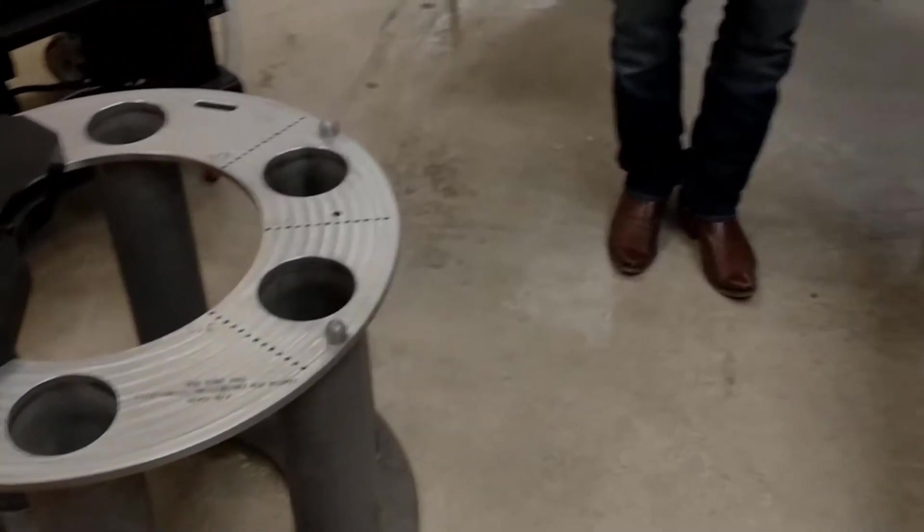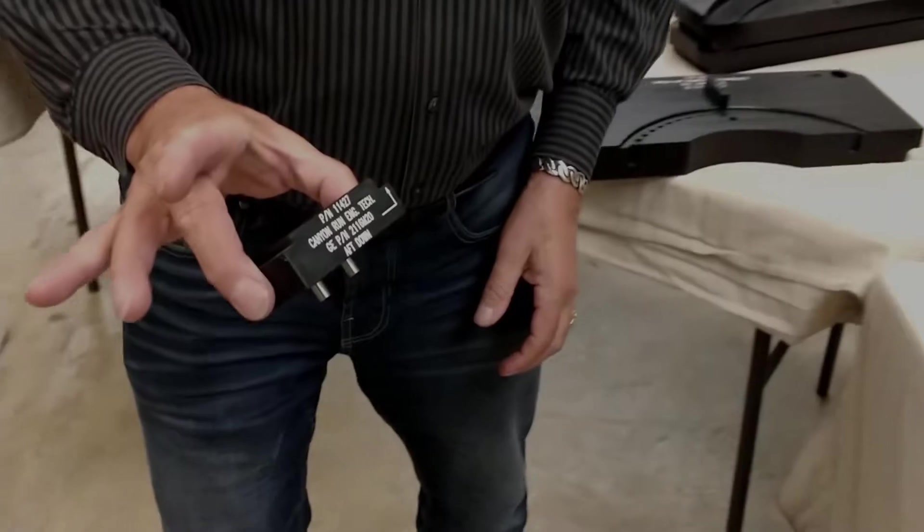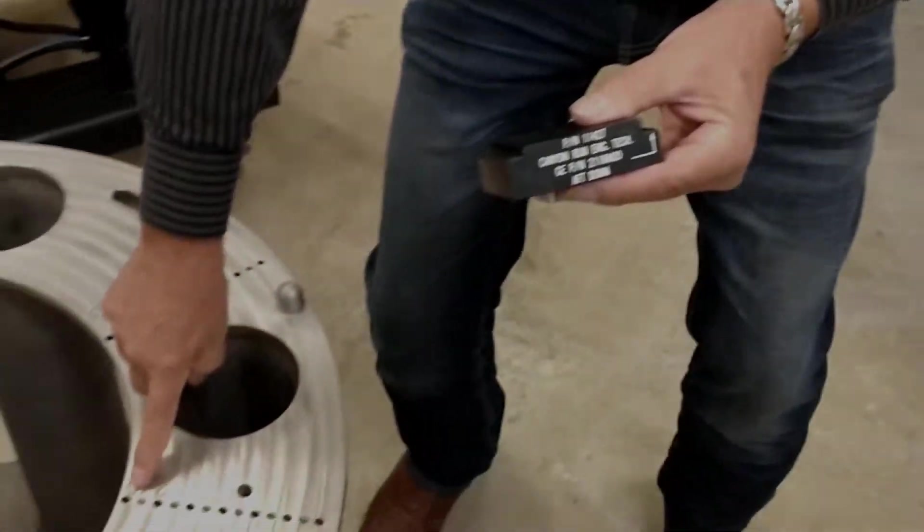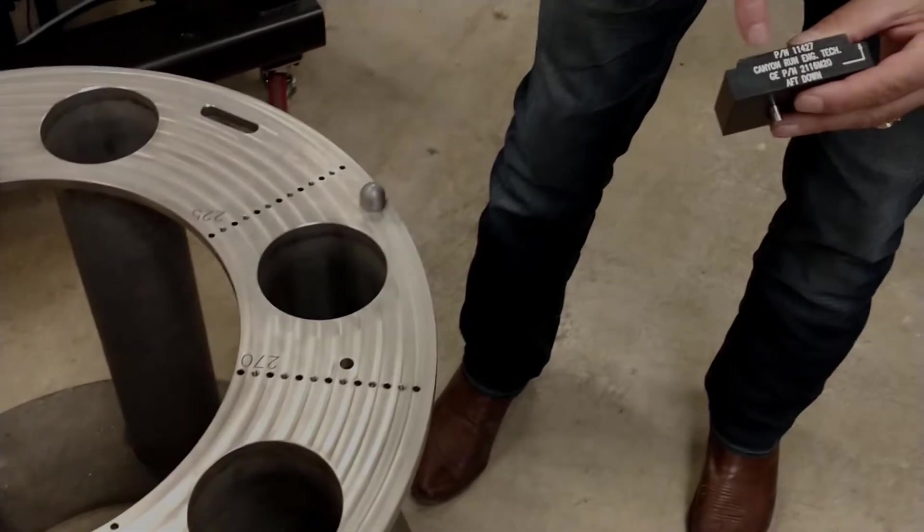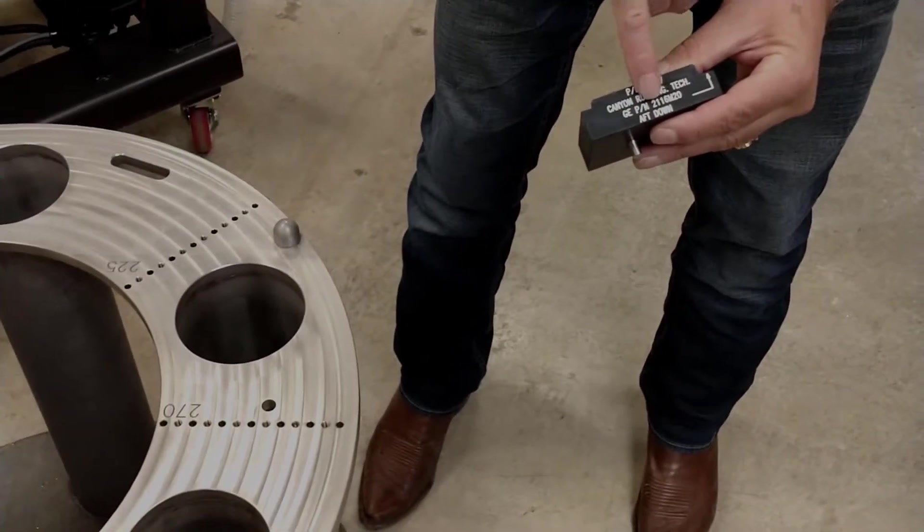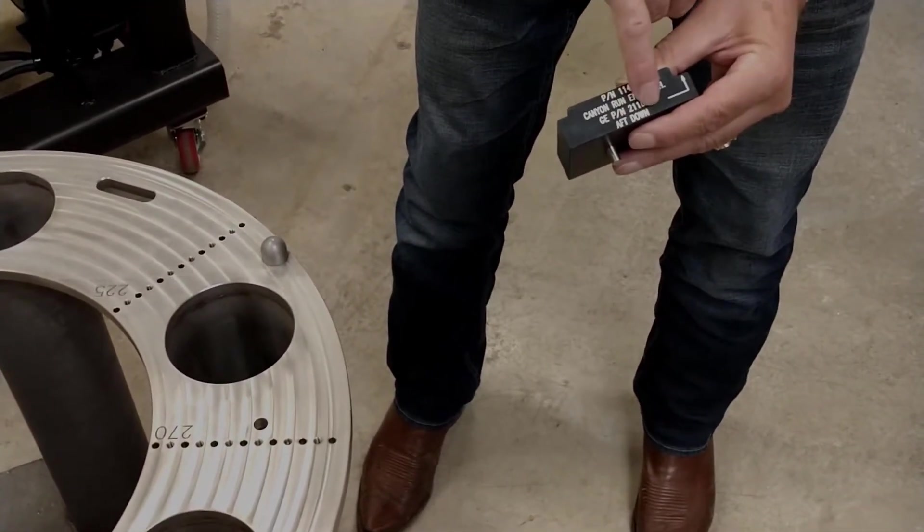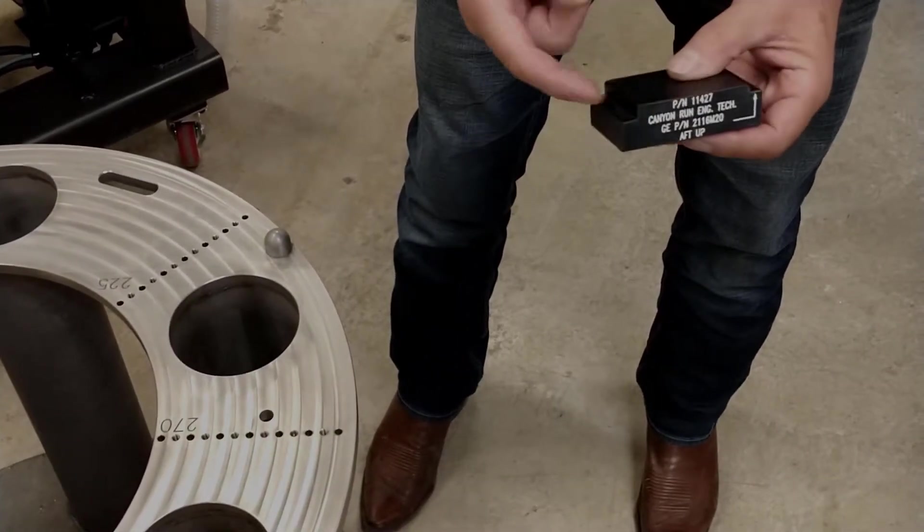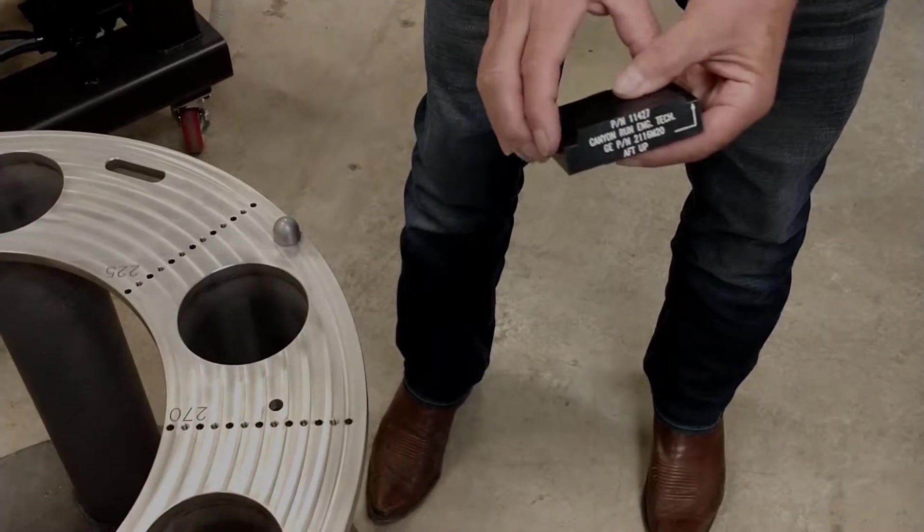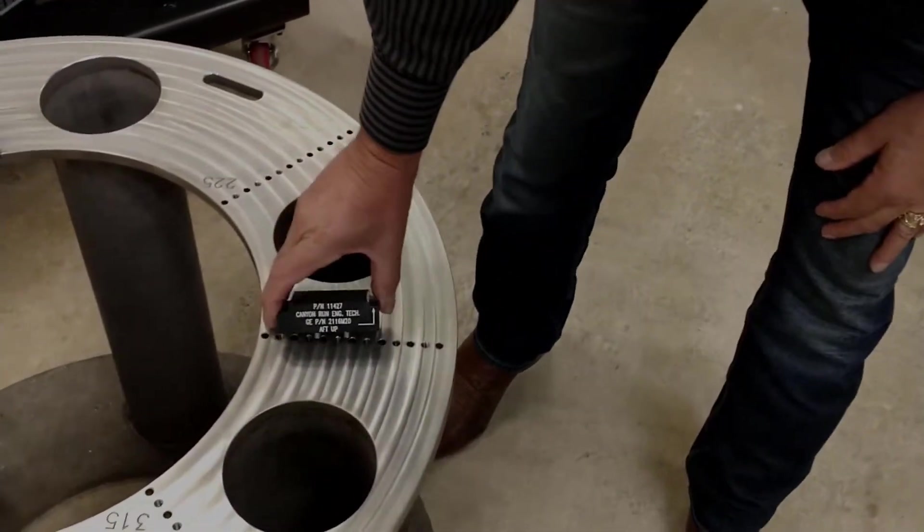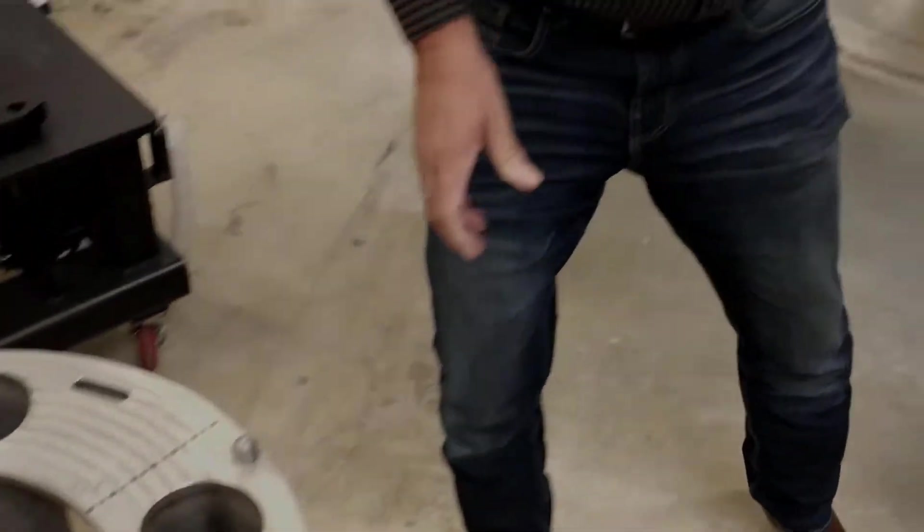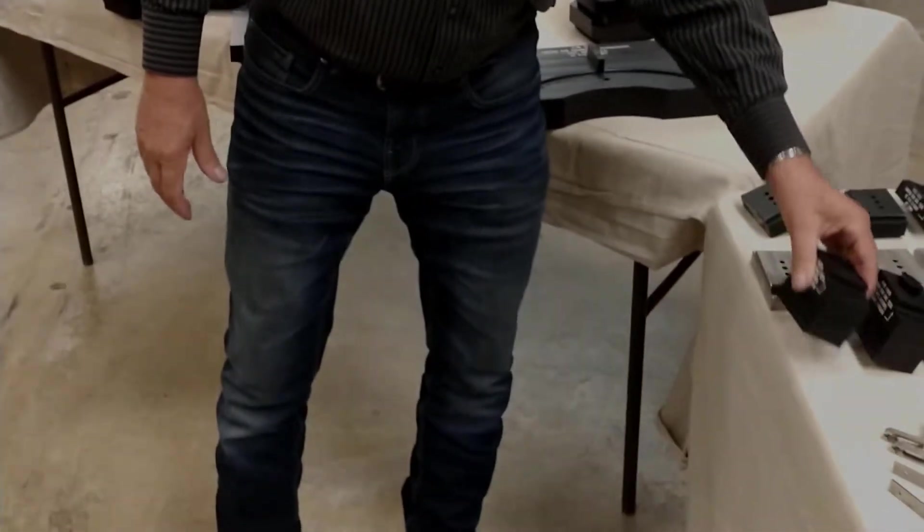So we also have a design of locator blocks like these that will fit down through these holes, listed out with the GE part numbers. It tells you whether the aft is down or whether the aft is up. It's about this radius size. So again, it's all interchangeable for all of the different tools that we build.